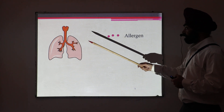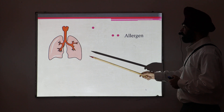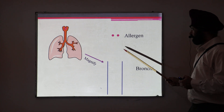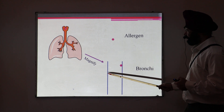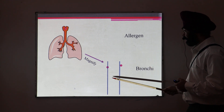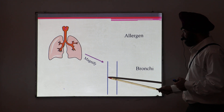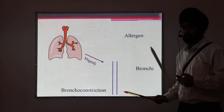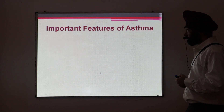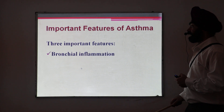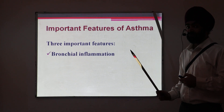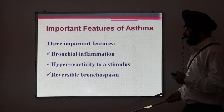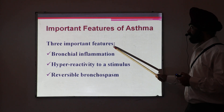Now, with the help of this animation, we can see: if this represents the lungs and these are the bronchi, and this is the allergen — if we magnify the bronchi, you can see that when the allergen comes, it interacts with the cells in the bronchi and ultimately you can see the constriction of the lumen, that is bronchoconstriction. So this is what happens in asthma. The three key features are: bronchial inflammation, hyperactivity to the allergic stimulus, and reversible bronchospasm.